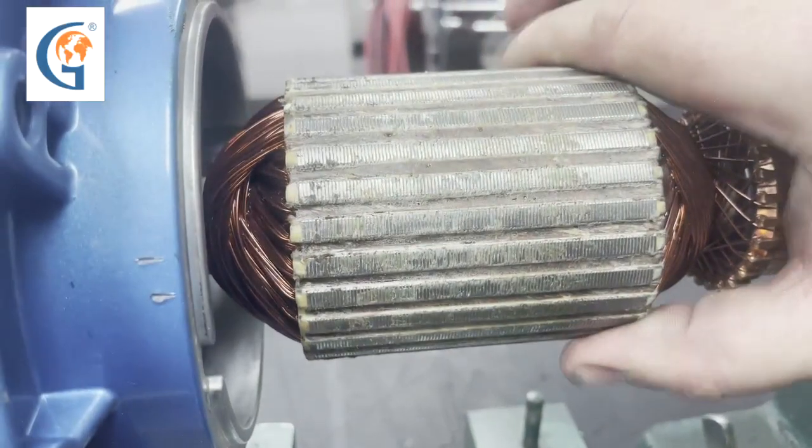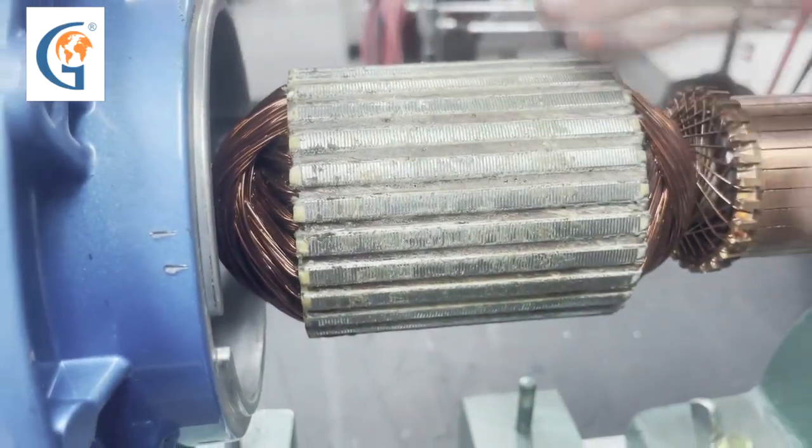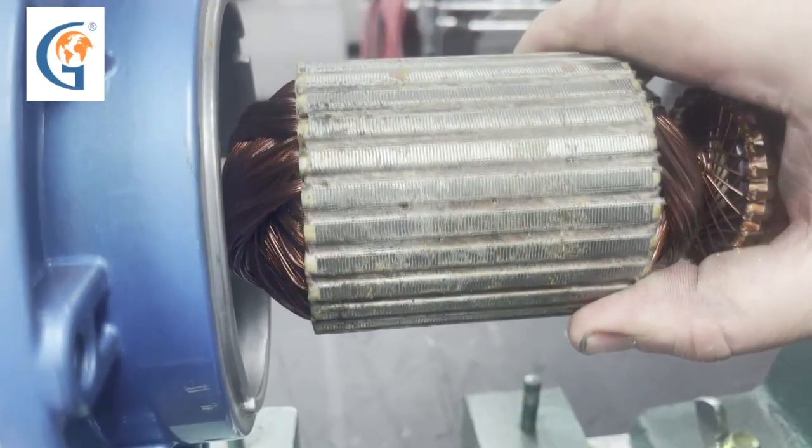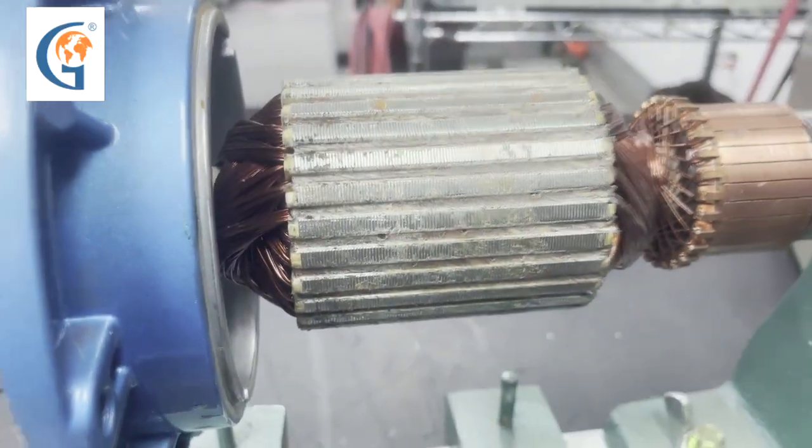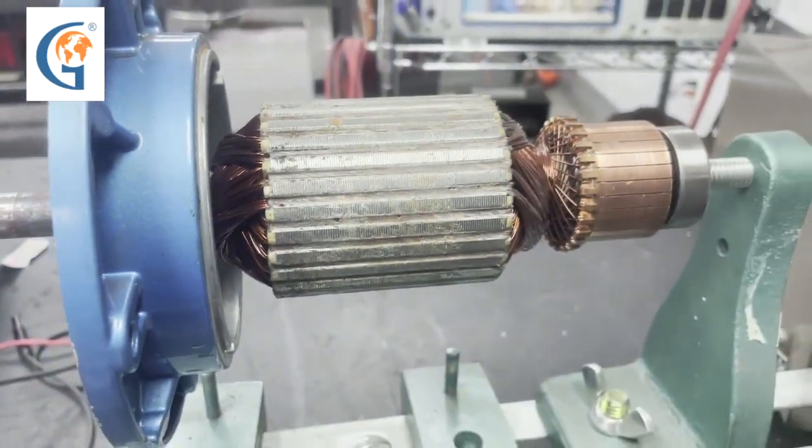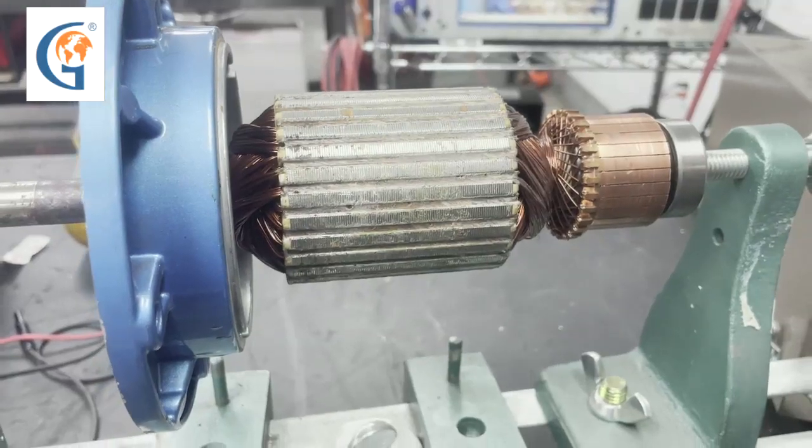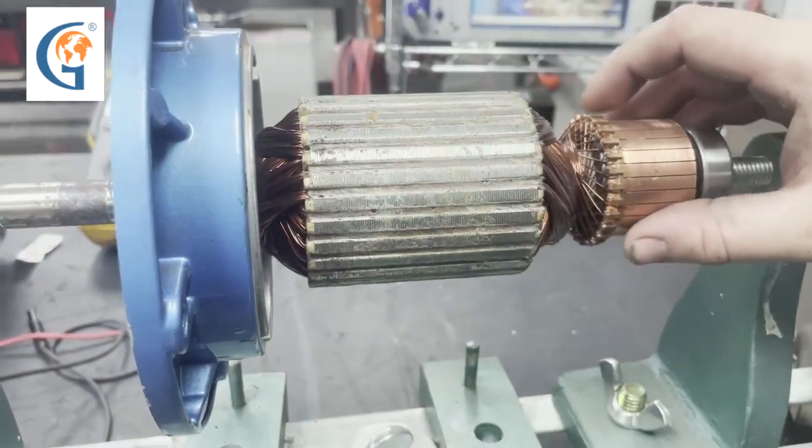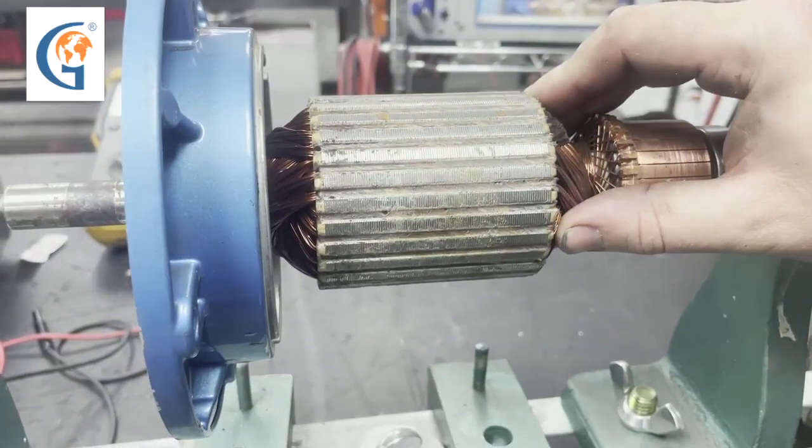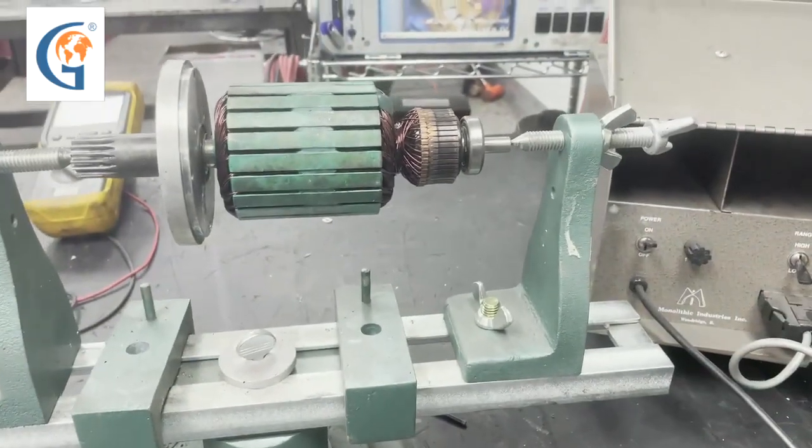We would need to get rid of that by washing and baking out this armature. That will get rid of some of the hopefully erroneous readings that we had. But this looks like an altogether good commutator and winding within this motor.